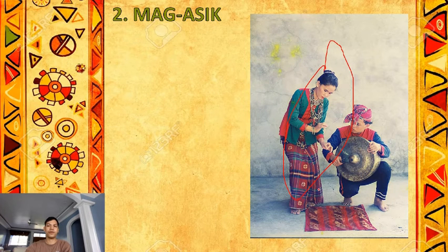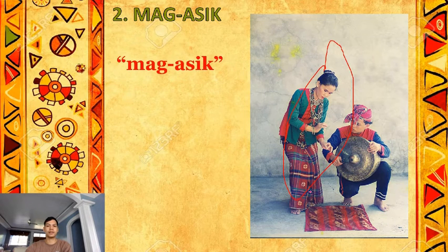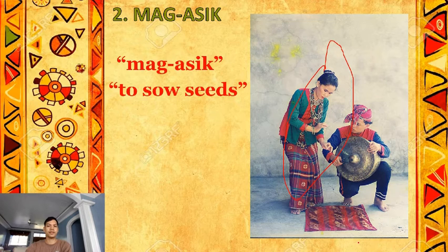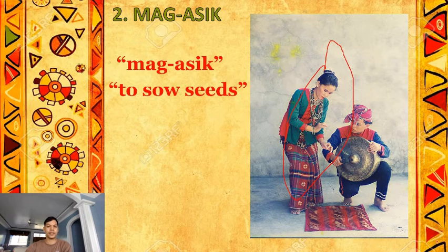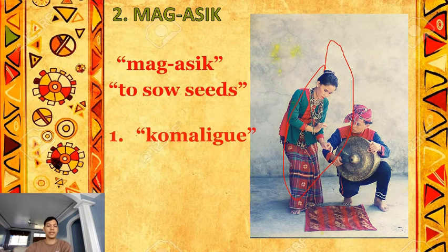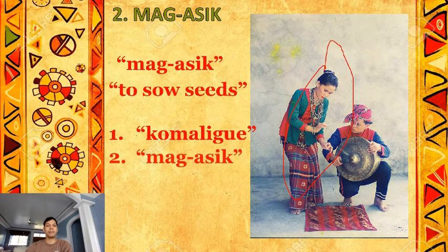Next is the Mag-asik dance, a Tirurai dance for girls performed in Maguindanao. According to the natives, the word mag-asik means to sow seeds. The dancers go around a cloth with small, heavy steps but with graceful hand and arm movements. The dance consists of two parts which the natives call Kumaligi and Mag-asik.